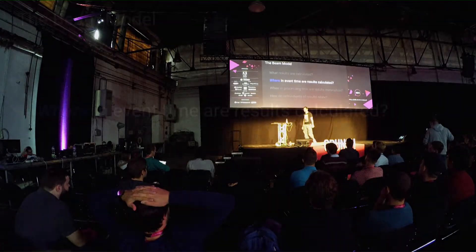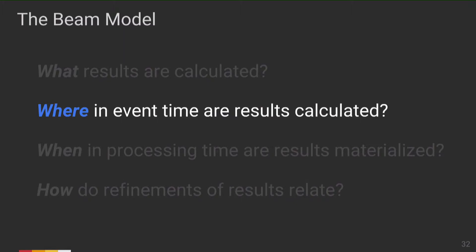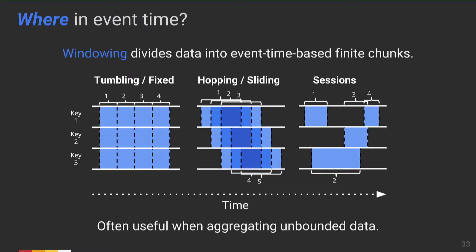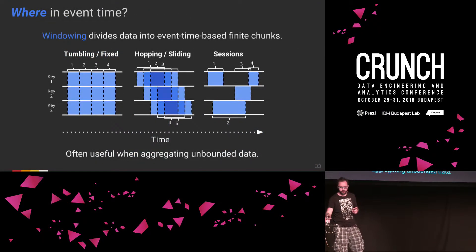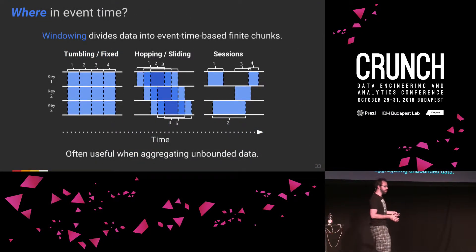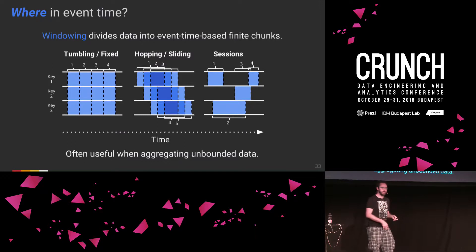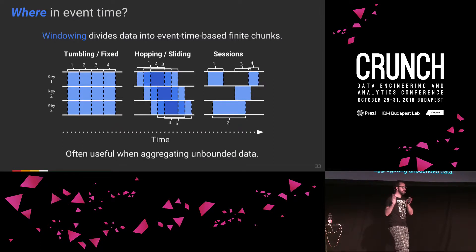Now: where in event time are results calculated? We typically talk about windowing with event time. Windowing divides data into event-time-based finite chunks, which is useful for partitioning unbounded streams into finite sections you can reason about. Three common types: tumbling or fixed windows slice time into fixed non-overlapping windows across all data; hopping or sliding windows are similar but overlap; and sessions — derived from the data — are particularly interesting.